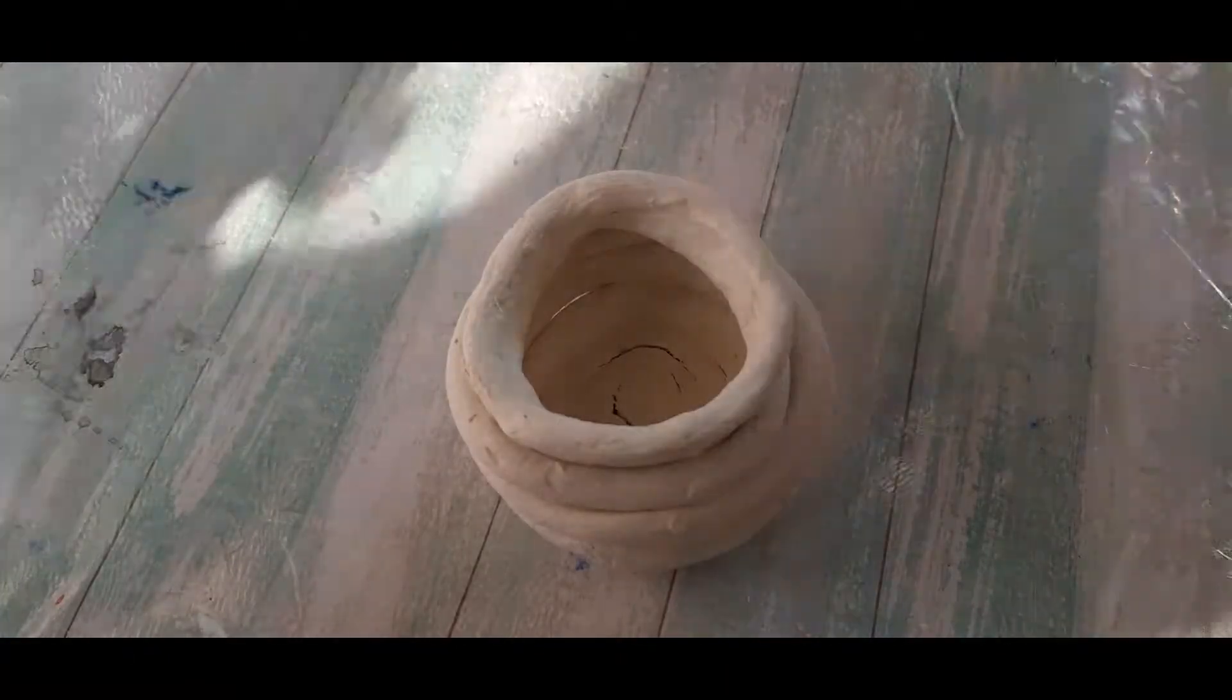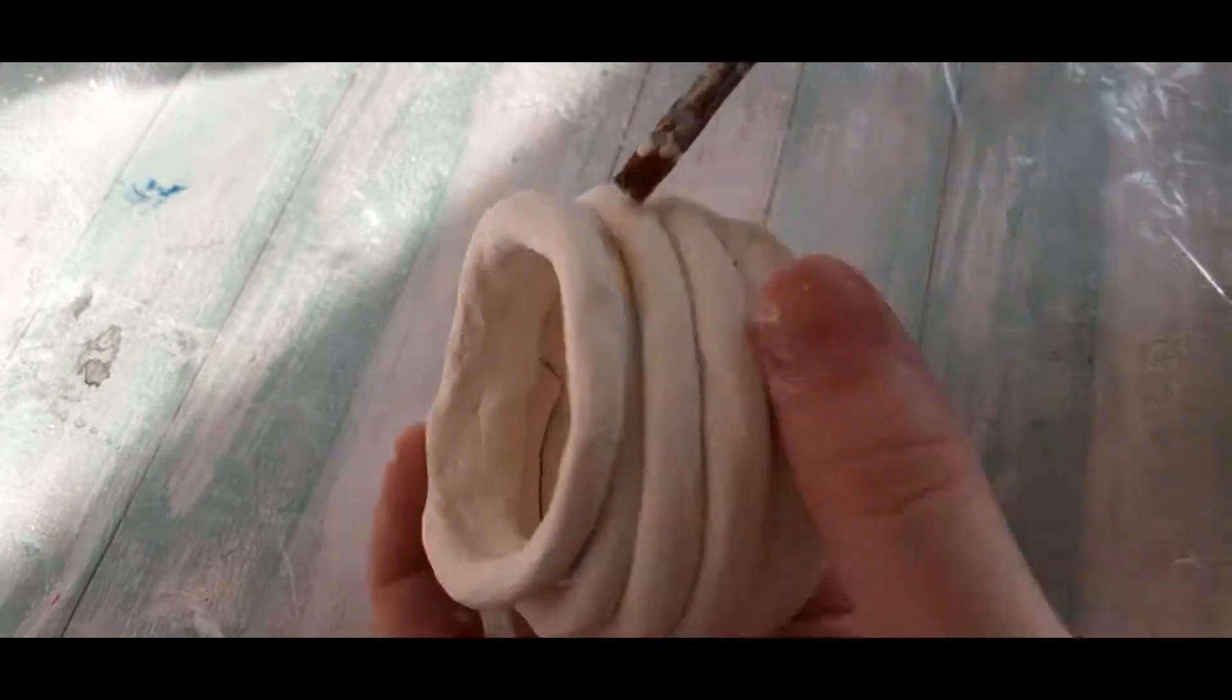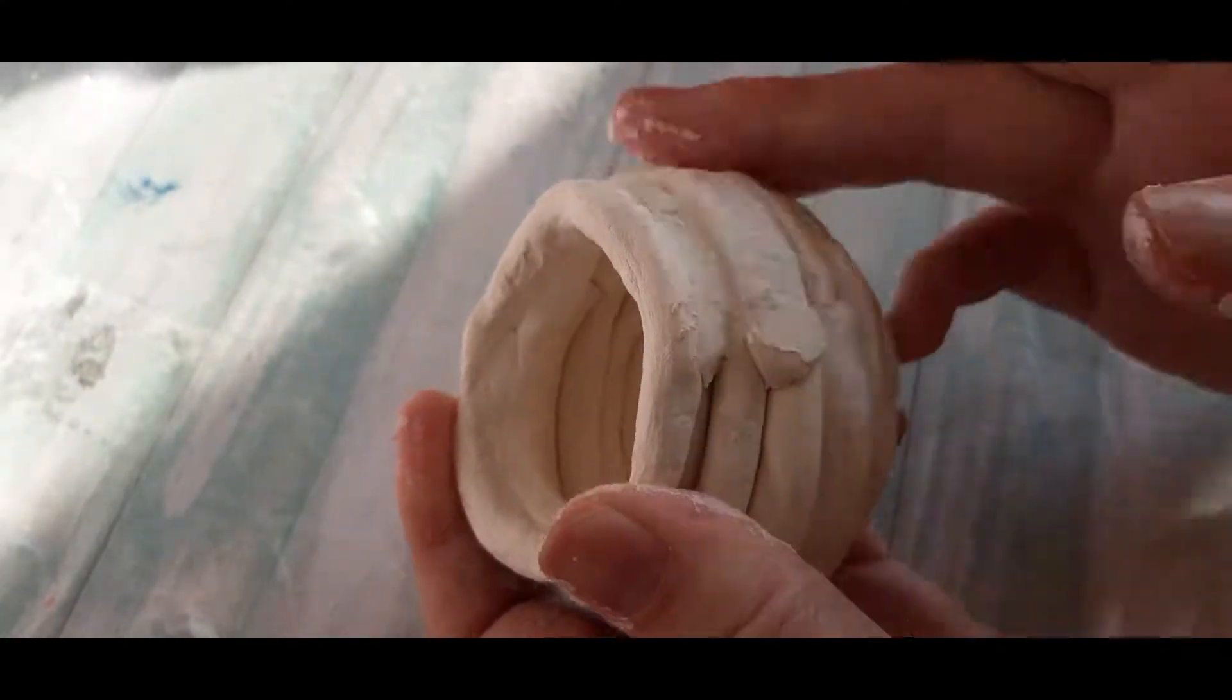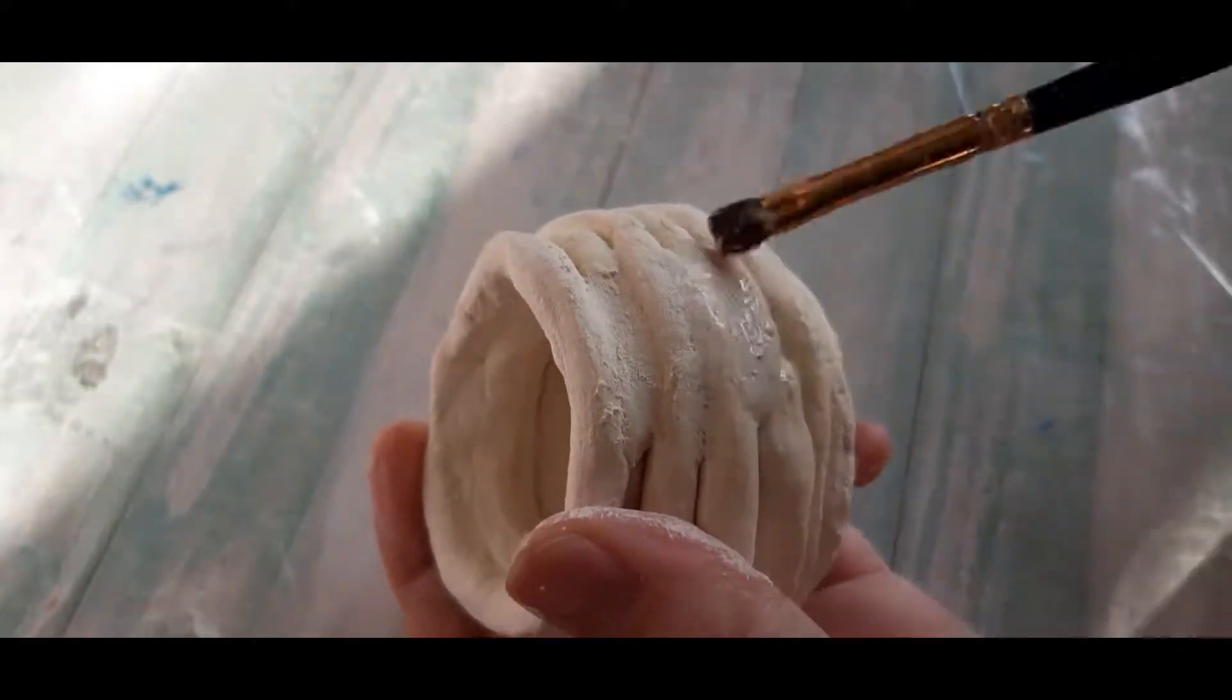After drying, it's time to smooth the external surface. I didn't want those stripes, so I filled the space between them with clay.